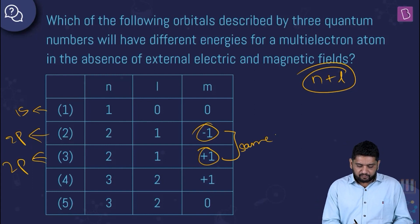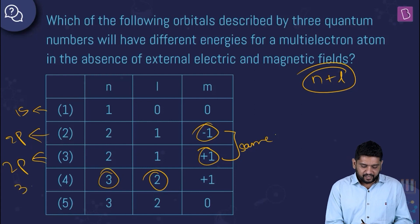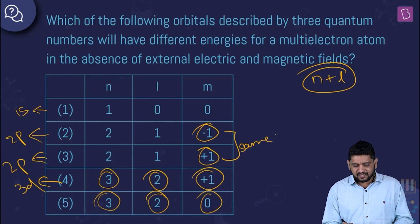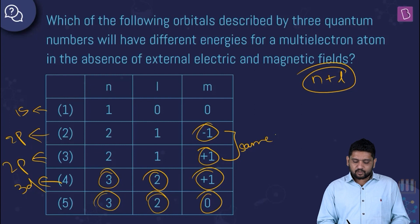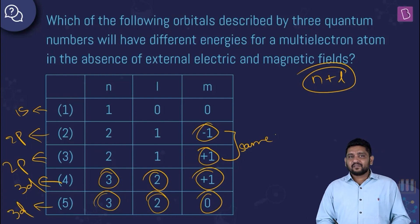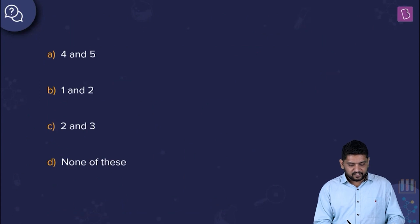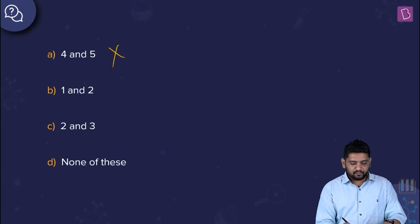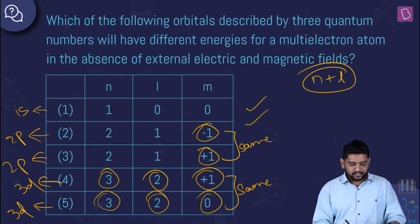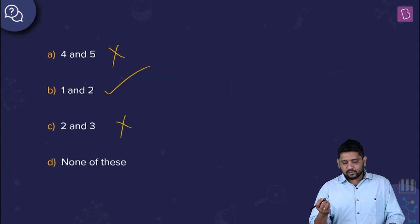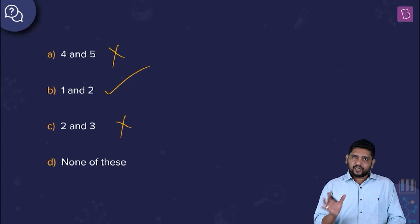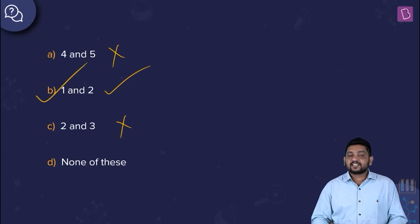Options 4 and 5 both have n=3, l=2 — that's 3d in different orientations (including 3d z² for m=0), so they also have the same energy. In the absence of an external electric or magnetic field, orbitals with the same n+l value are degenerate. Options 1 and 2, however — 1s and 2p — definitely have different energies. So the correct answer is option B.